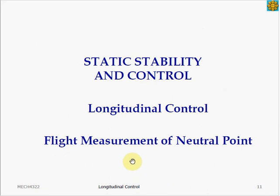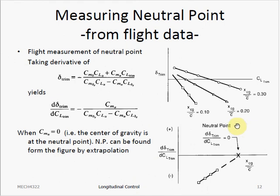We have talked about the stick-fixed neutral point before and derived the equation to compute its location. Here we will talk about how to measure an aircraft's neutral point through flight data instead of from the derived equation. We can do this by flying the aircraft multiple times with different center of gravity locations, shifting around its trim position, and obtaining a series of flight test data of the elevator deflection required to trim the airplane at various trim points.